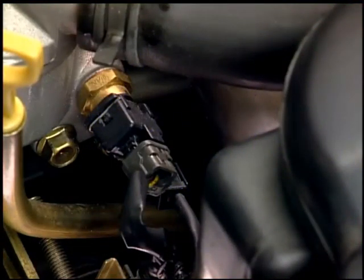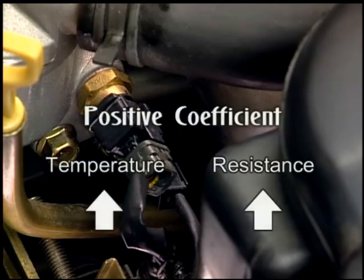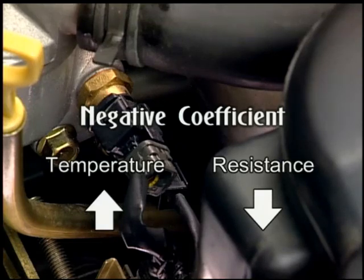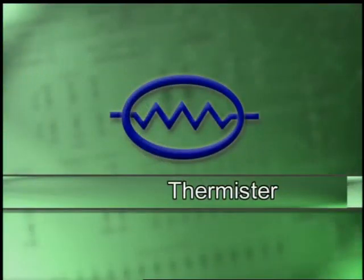Thermistors are variable resistors that change their resistance in response to temperature. They can either be positive coefficient, meaning they increase in resistance as temperature increases, or negative coefficient, meaning they decrease in resistance as temperature increases. A thermistor is shown in wiring diagrams as the symbol for a resistor enclosed in an oval.